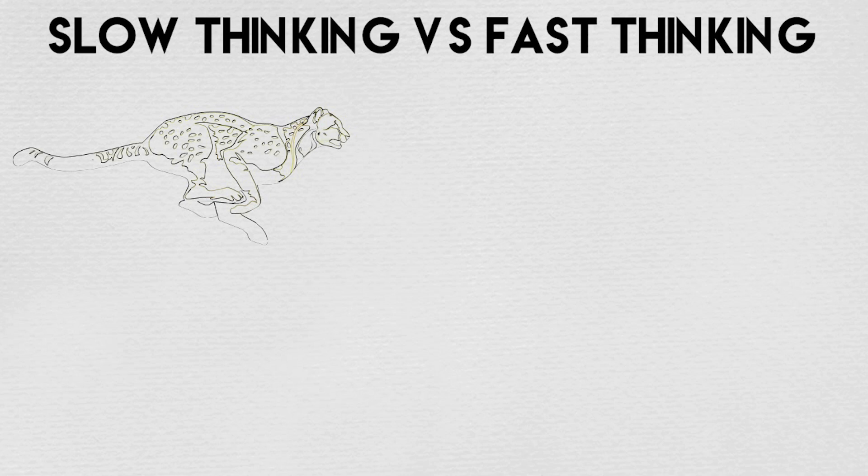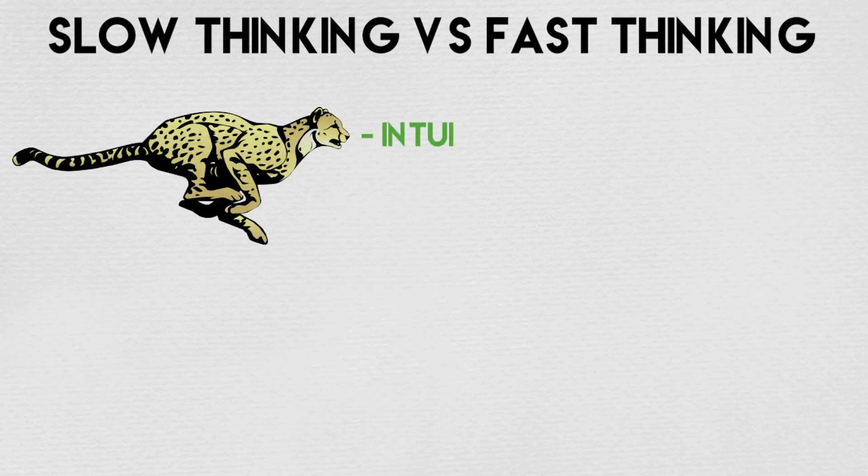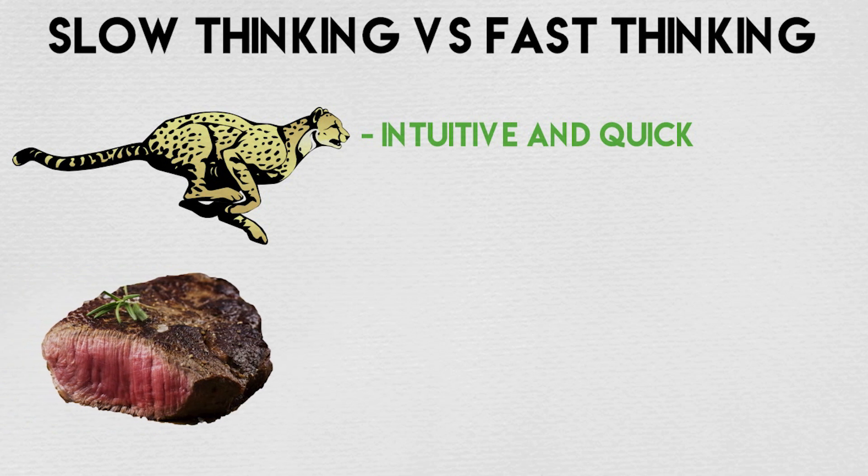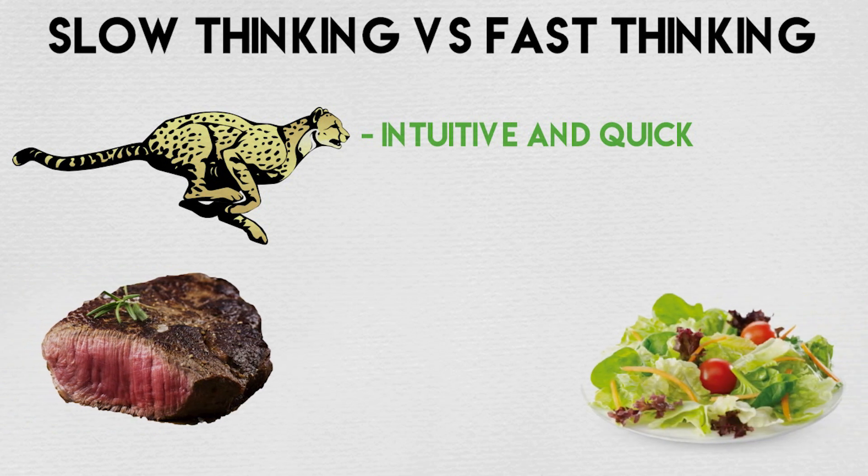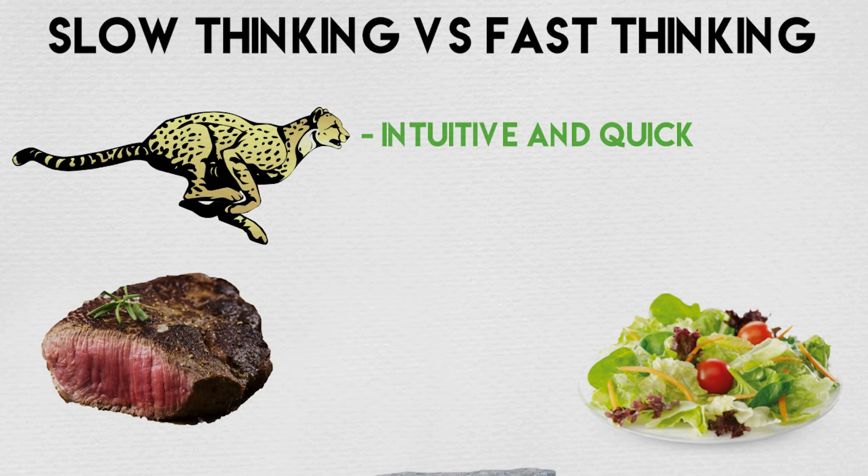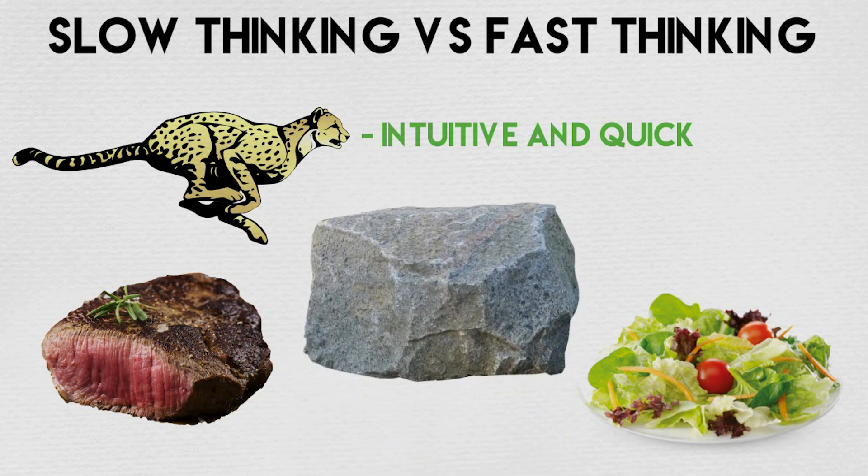Slow thinking versus fast thinking. What's the difference between slow thinking and fast thinking? Fast thinking is intuitive and quick. It's the thinking used when someone asks you if you want to eat a steak or salad, if you want to watch a Dwayne Johnson movie, 100%, deadlifts or cardio?